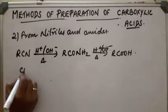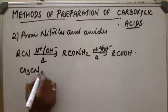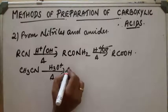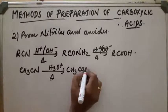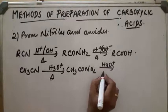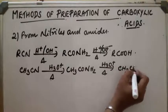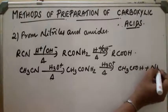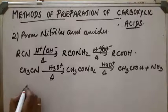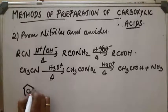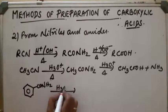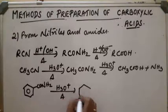Let us take one example: CH3CN with acid — the reaction takes place and gets converted into CH3CONH2 (acetamide). Then this gets converted into the corresponding acid CH3COOH plus NH3. For an aromatic compound, the nitrile reacts similarly and gets converted into benzoic acid (COOH).